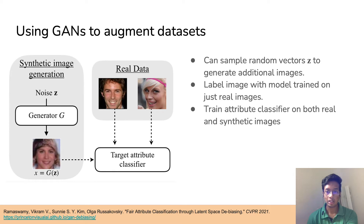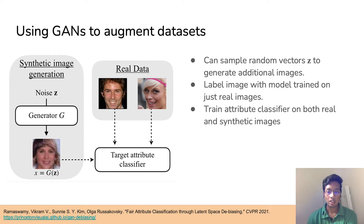A possible workaround is to use GANs to create a synthetic dataset and augment our real images with these synthetic images. We can sample random vectors Z in the latent space and use a generator to get an image for each latent vector. We can then hallucinate labels for these synthetic images using a model trained on just the real images, and train an attribute classifier on both real and synthetic images.